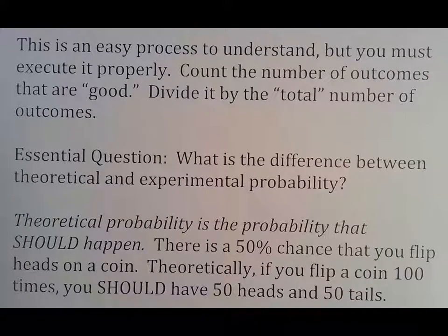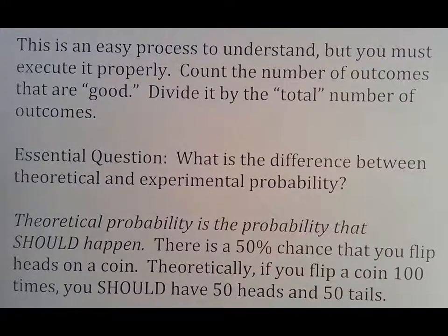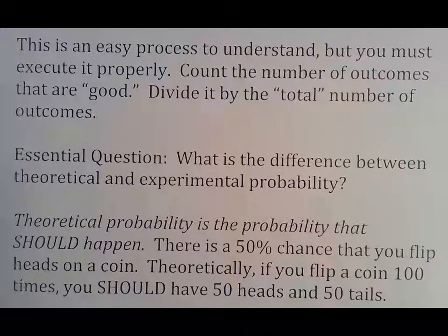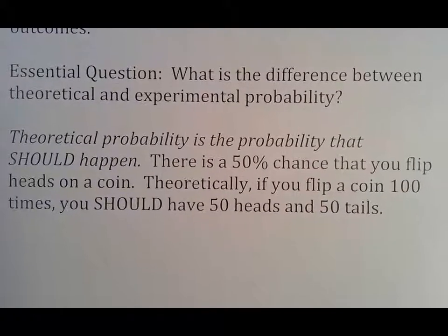Once you understand it's really not that bad if you can just break it down to that piece of information. This is an easy process to understand, but again you must execute it properly. Count the number of outcomes that are good, which is your successes, divided by the number of total outcomes, which is the total, and that gives you your number.